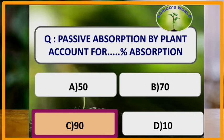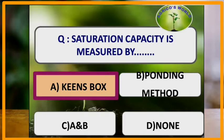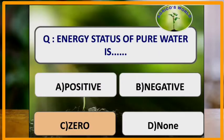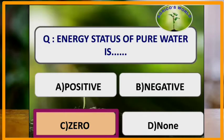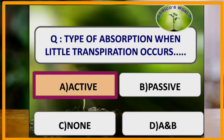Saturation capacity is measured by Keene's box. The energy status of pure water is zero; if any solutes are added, it becomes negative. The energy status of water will never be a positive value. The type of absorption when little transpiration occurs is active absorption.